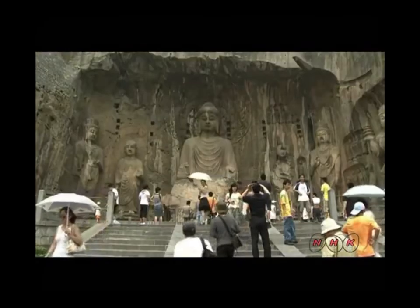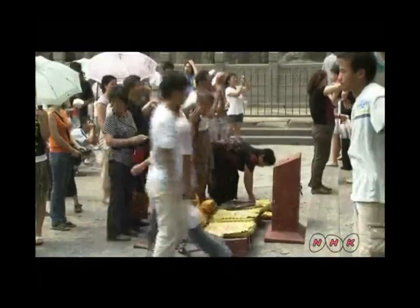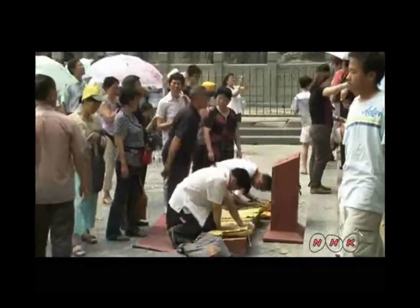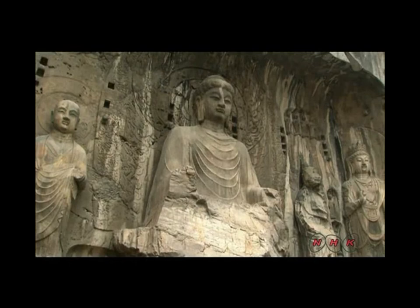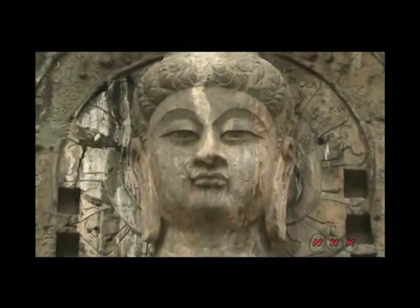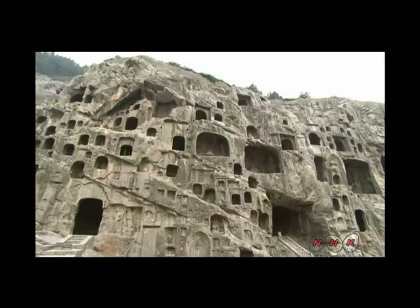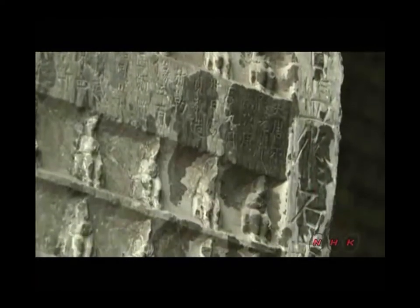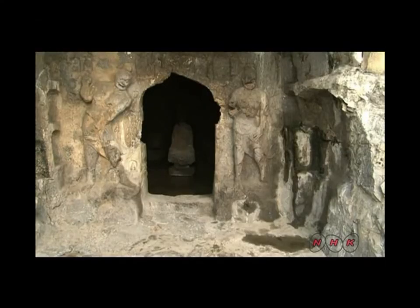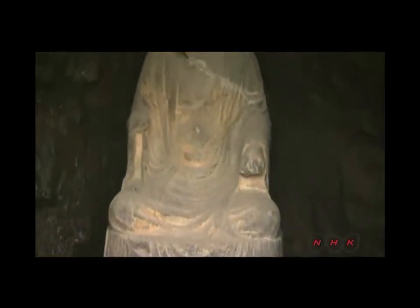Grotto construction resumed during the Tang dynasty. Fengxiansi Cave was built in 675 on the order of Gaozong, the third emperor of the Tang dynasty. The Vairochana Buddha statue in the main hall is 17 meters high, and it is believed the statue was built with a donation from Empress Wu Zetian. There are statues of the bodhisattva, Buddha's disciples, and other Vajradhara images around the central Vairochana figure, regarded as the great masterpieces of Buddhist art during the Tang dynasty. About 60% of the grottos were made during the Tang period. One cave contains thousands of carved Buddha statues, some less than 10 centimeters high. It had remained hidden for 1,500 years before being discovered in the 20th century, and was sadly looted shortly afterwards.